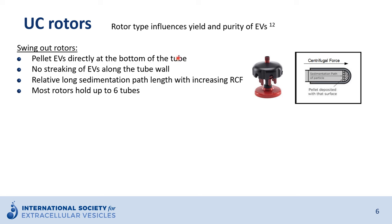For ultracentrifugation, two types of rotors can be used. The first is the so-called swing-out rotor. During centrifugation, the buckets placed in these rotors reach a horizontal position, so extracellular vesicles present in the solution migrate horizontally from the top to the bottom of the tube. This means there is no streaking of vesicles along the tube wall. It also means there is a relatively long sedimentation path, particularly for vesicles starting at the top of the tube. Since relative centrifugal force increases linearly with the radius, the RCF increases as the vesicle migrates downward. Most of these rotors hold about six tubes.